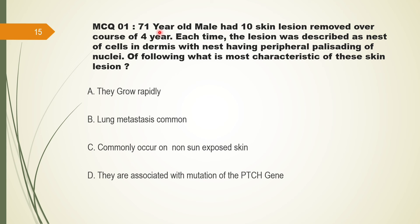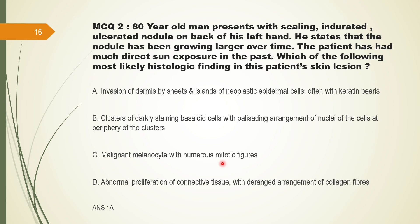MCQ: A 71-year-old male had a tan skin lesion removed over the course of 4 years. Each time the lesion was described as a nest of cells in the dermis with peripheral palisading of nuclei. What is the most characteristic finding of this skin lesion? Since peripheral palisading is present and it is a recurrent tumor, this is a case of BCC. In BCC we know it is associated with mutation in the tumor suppressor gene PTCH. The answer would be PTCH.